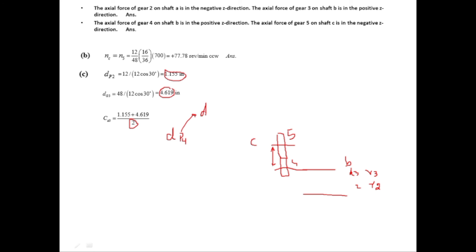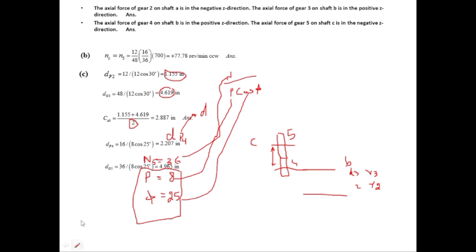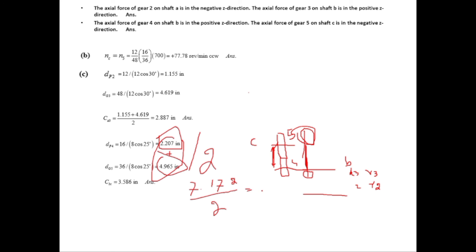For gear 4: N4 = 16, P = 8, and ψ = 25 degrees. Using D = N / (P × cos ψ) gives D4 = 2.207 inches. For gear 5: N5 = 36, with the same P and ψ, giving D5 = 4.965 inches. To find the center distance between shafts B and C, sum D4 and D5 to get 7.172 inches and divide by 2, giving a center distance of 3.586 inches.